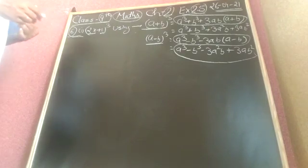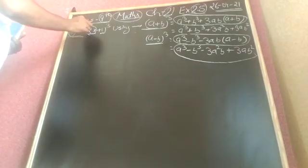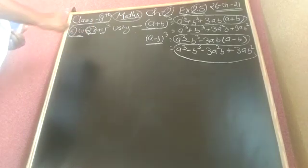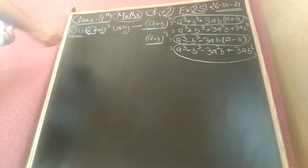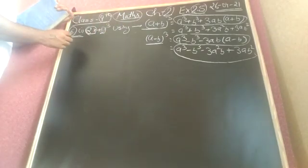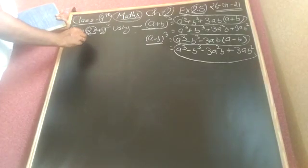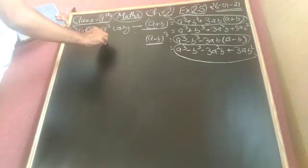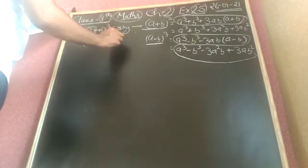In question number 6, first part, we have 2X plus 1 whole cube. In the place of A we have 2X, and in the place of B we have 1. After using the identity, on the places of A and B we put 2X and 1. We get 2X whole cube plus 1 cube plus 3A squared B.